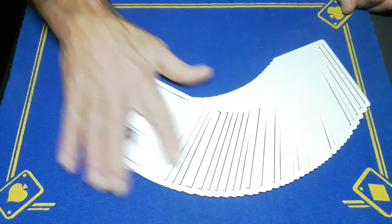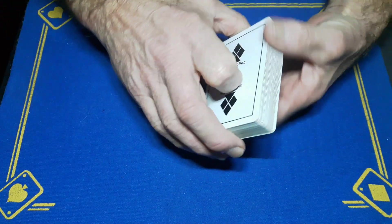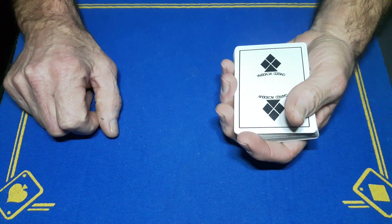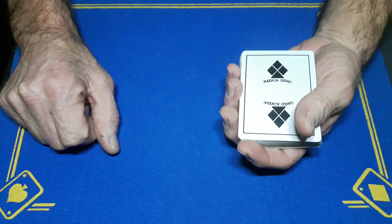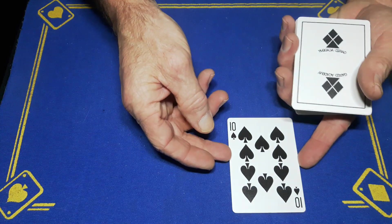Right guys, Gaffed is back with the explanation to the incredible any card any number. It does use the countdown force. You pick a number between one and ten, but what we've got is your fourth card.